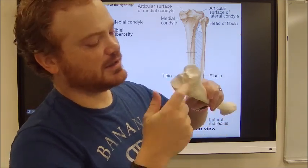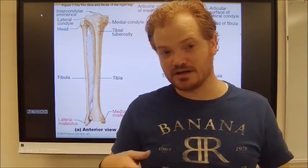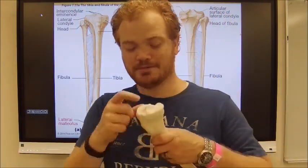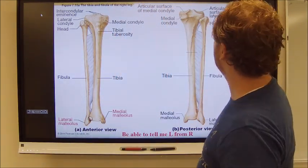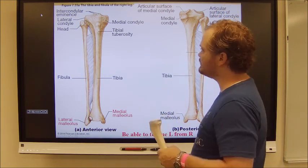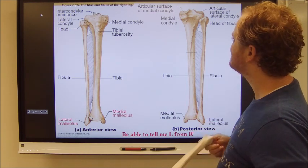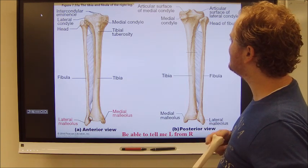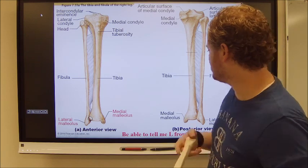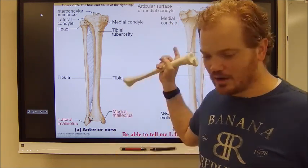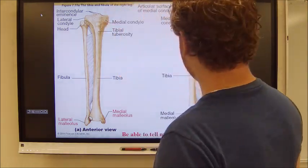The tibia has an intercondylar eminence at the top — this is where your ACL, the anterior cruciate ligament, connects. That's the ligament people commonly hear about tearing.